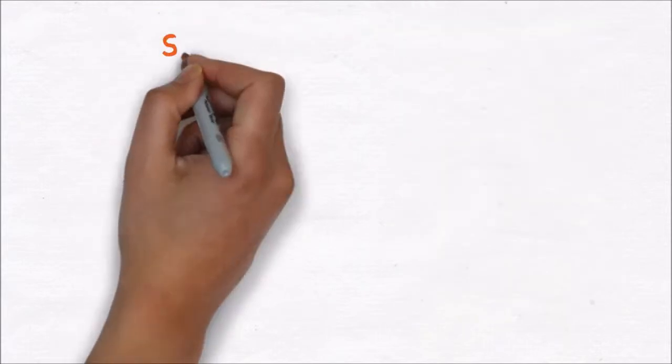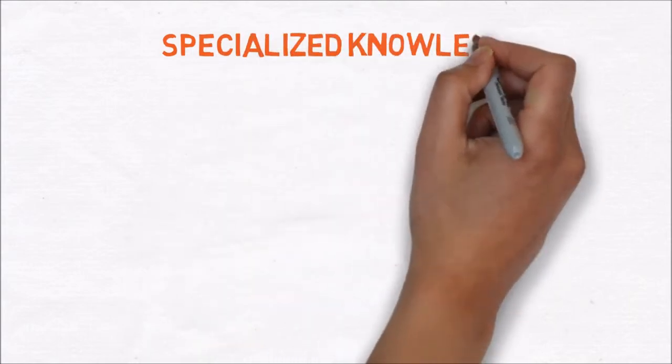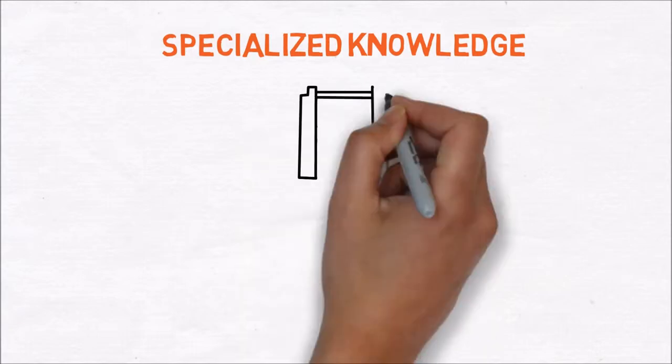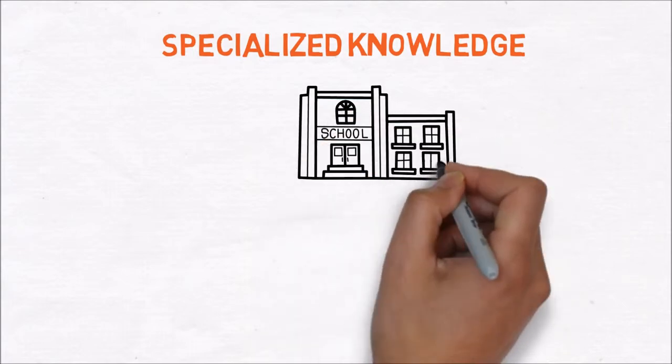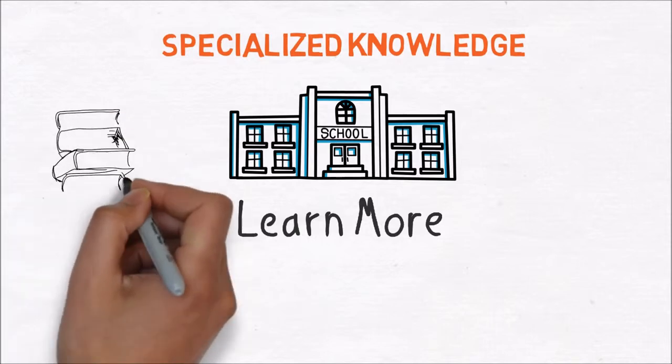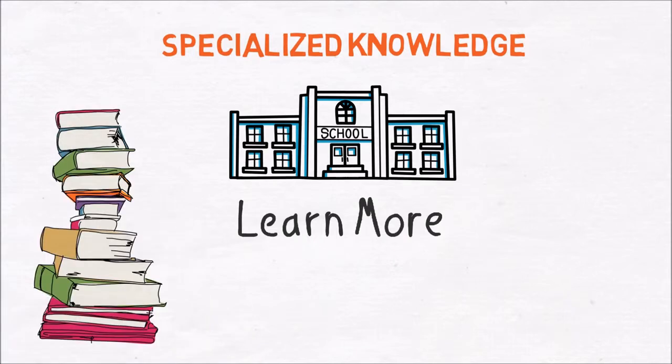The fourth step is specialized knowledge. Successful men never stop acquiring specialized knowledge related to their profession or business. Most people who are not successful usually make the mistake of believing that they have to stop acquiring knowledge after finishing their school. However, just having knowledge doesn't make you intelligent or successful. Not acquiring knowledge but using knowledge makes someone successful. Focus on the knowledge that will make your desires come true and help you achieve them.